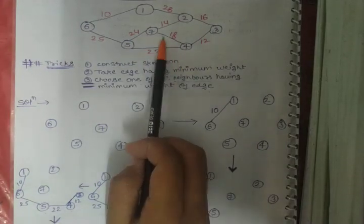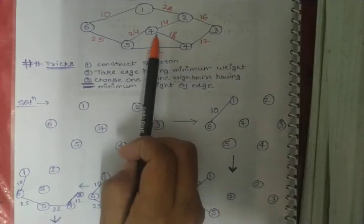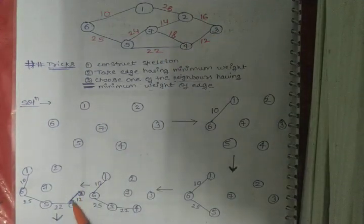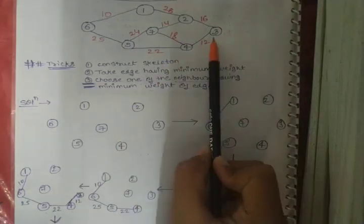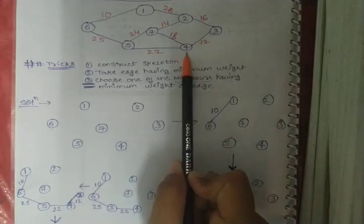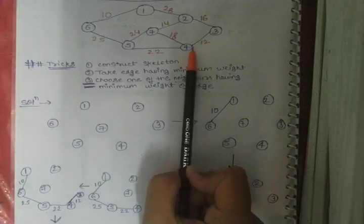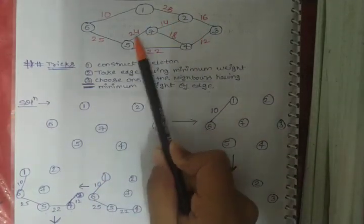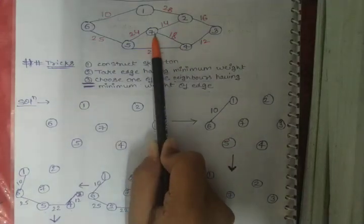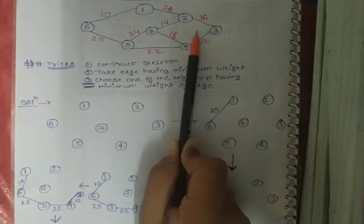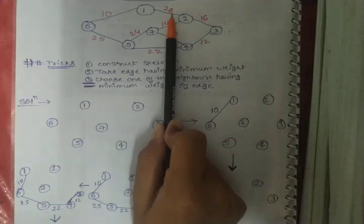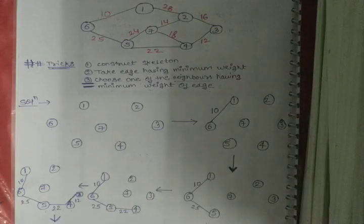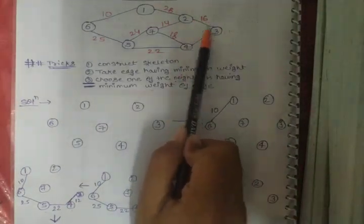The neighboring nodes of node 4 include one already completed and one with edge value 18. The neighboring node of node 3 connects to one already-completed node. Looking at all edges: 28, 24, 18, and 16 - the minimum is 16. We are taking only those edges whose source nodes are already connected to the tree, and minimum among these is 16.